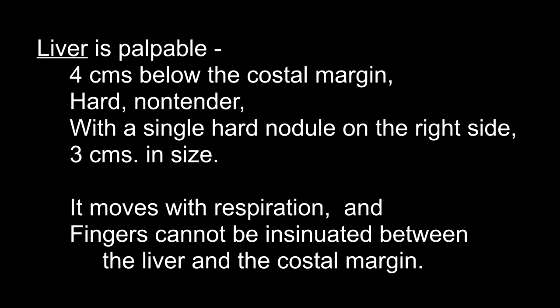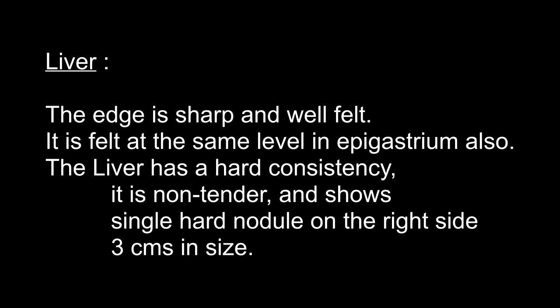The liver is palpable 4 cm below the costal margin in the mid-clavicular line. It is hard, non-tender with a single hard nodule on the right side, 3 cm in size. It moves with respiration and fingers cannot be insinuated between the liver and the costal margin. How did you palpate for the liver? With the patient lying in supine position with legs semi-flexed, I asked the patient to relax and breathe through open mouth. Starting in the right iliac fossa, I placed my extended fingers parallel to the liver border, pressed with moderate pressure during expiration, and waited to feel the lower border during full inspiration. Moving up 1 cm after each breath, I felt the edge 4 cm below the costal margin. I then palpated the surface of the liver — it was hard in consistency, non-tender, with a big hard nodule on the right side about 3 cm in size.